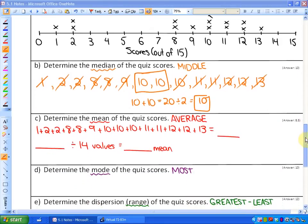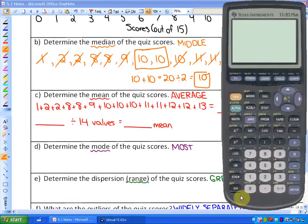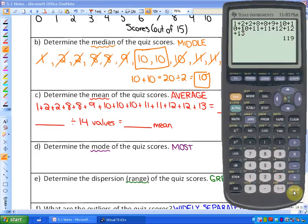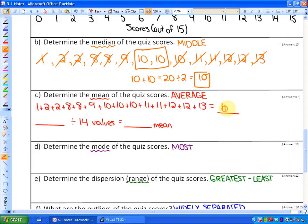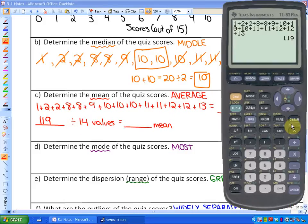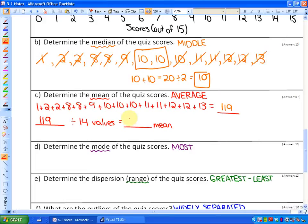In the next example it says determine the mean of the quiz scores. So if I add up all those scores really quickly, I will get the mean. So one plus two plus two plus eight plus eight plus nine plus ten—so you want to represent every person—so ten three times plus eleven plus eleven plus twelve plus thirteen. That looks like one hundred and nineteen is my sum. So in order to get my mean, I would do one hundred and nineteen, and in total there are fourteen values, so one nineteen divided by fourteen. Divide that by fourteen, and I have an average of eight point five. So my mean score on that test is eight point five.